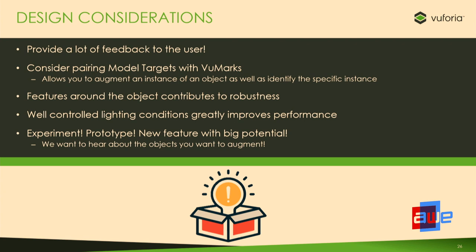Some more quick design considerations: always provide as much information to the user as possible. If you're having trouble detecting something or switching modes, bubble that information up to the user so they always know what's going on — leaving users in an unknown state can confuse and frustrate them. A great idea from a colleague is to pair model targets with view marks: model targets detects the type of object, while a view mark can provide serial number information to identify the specific instance. And we really want to encourage you guys to experiment — this is new and exciting technology with a lot of opportunity.